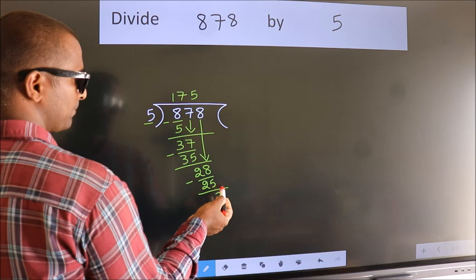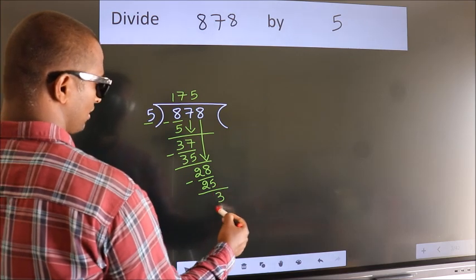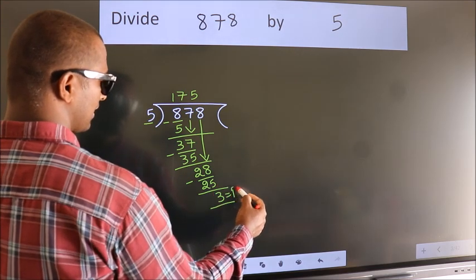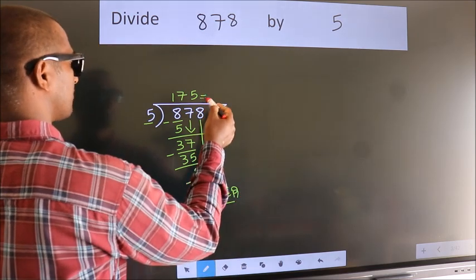No more numbers to bring down. So we stop here. This is our remainder. This is our quotient.